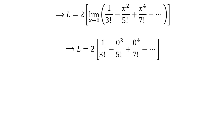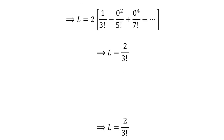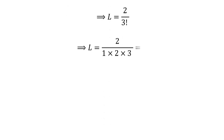As the limit L has become a polynomial function, and a polynomial is continuous at every point of the real number line, we can plug 0 for x. Further simplification gives us the limit L is equal to 2 upon factorial of 3, which further simplifies to L is equal to 1 upon 3.